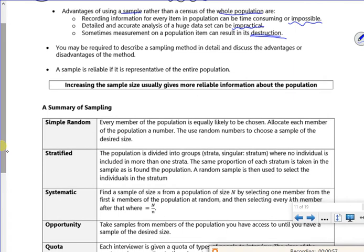So it says it may be required to describe a sampling method and the advantages and disadvantages. The bigger your sample, the better it is.